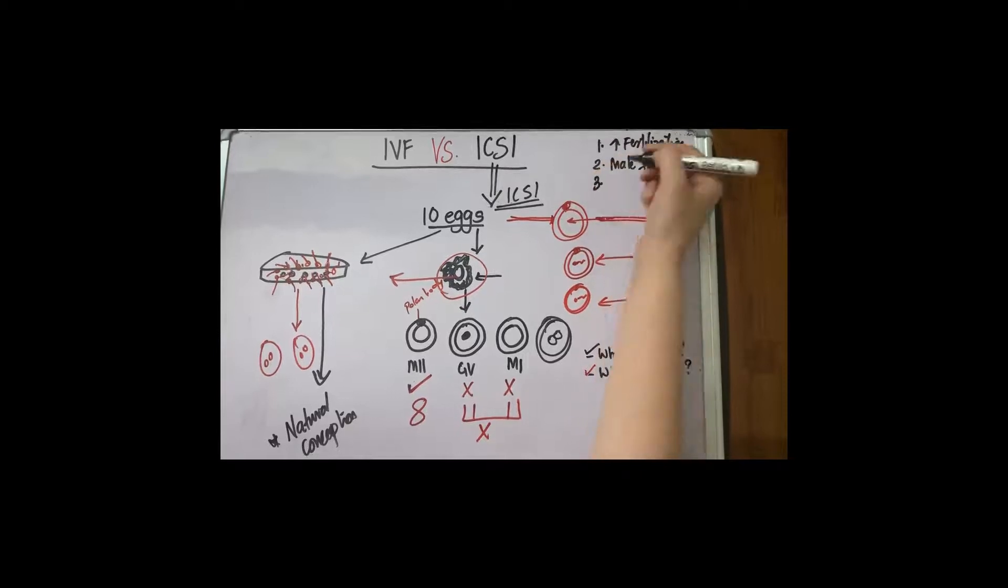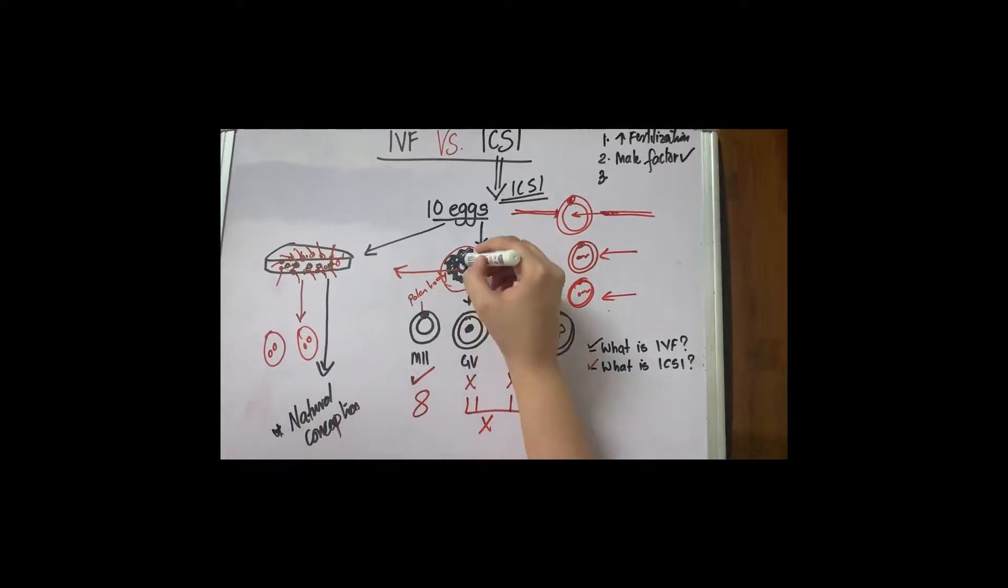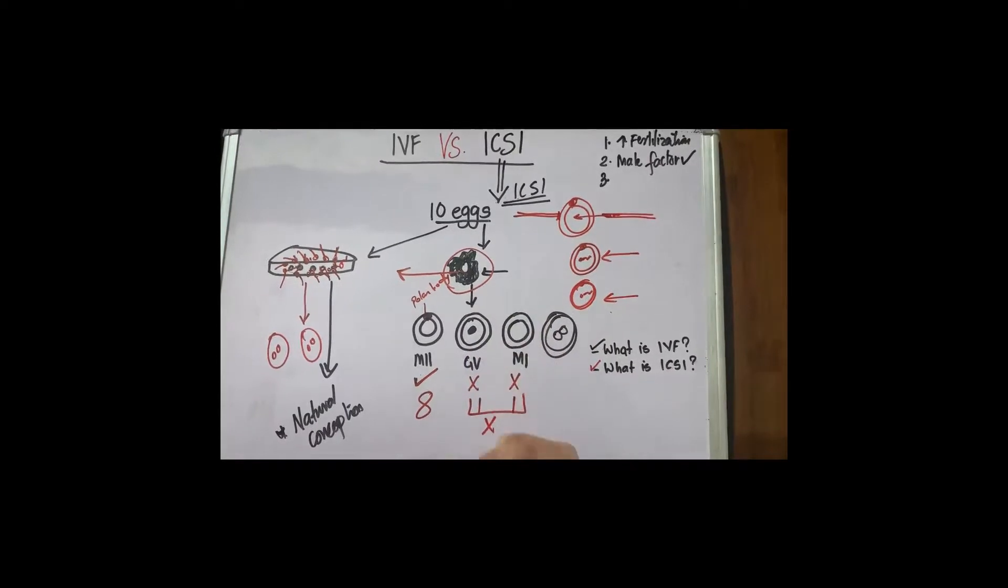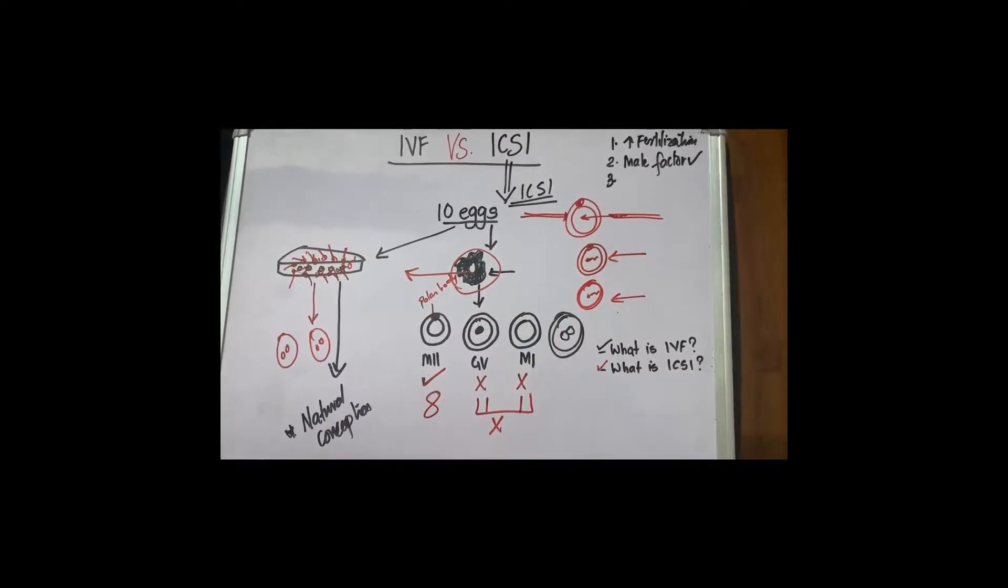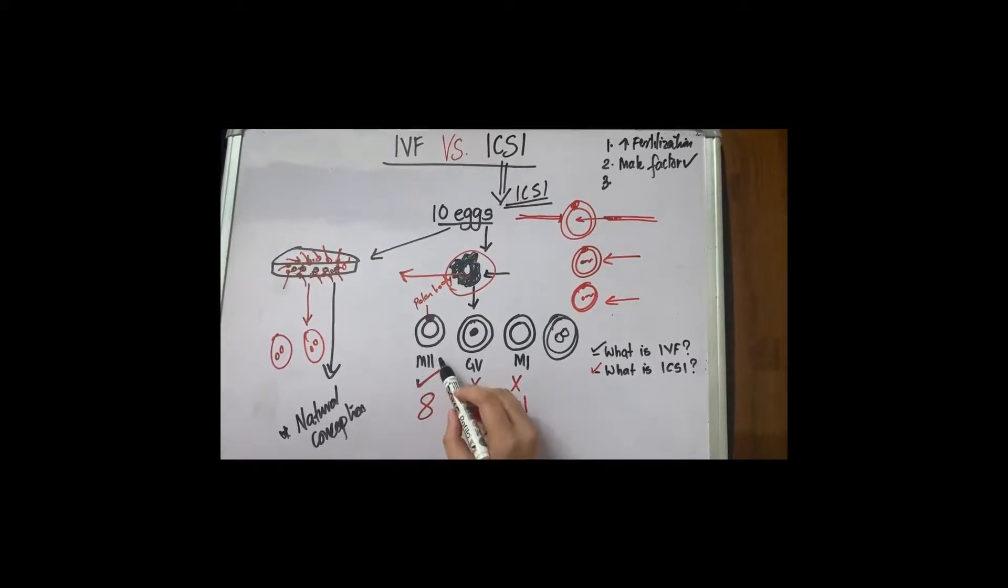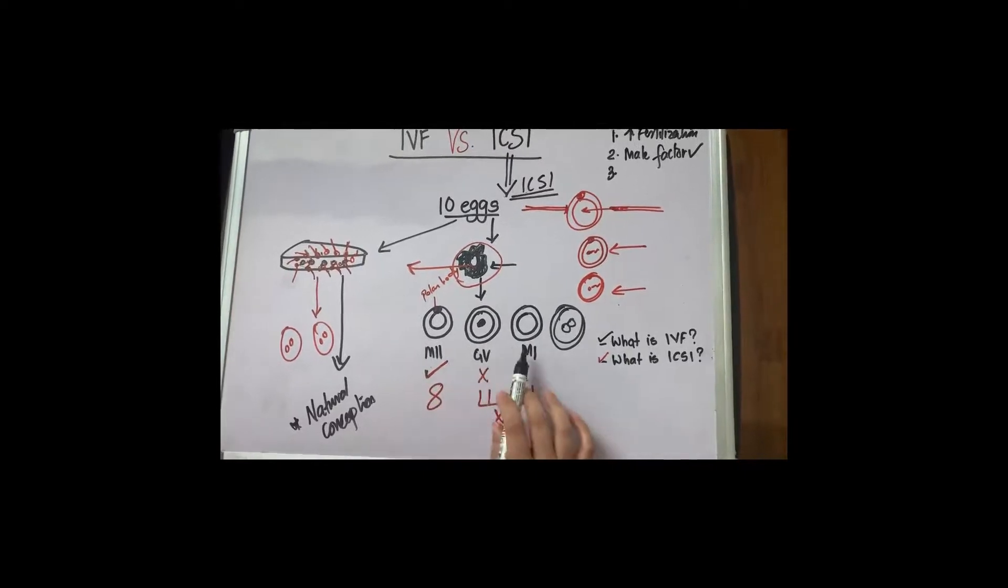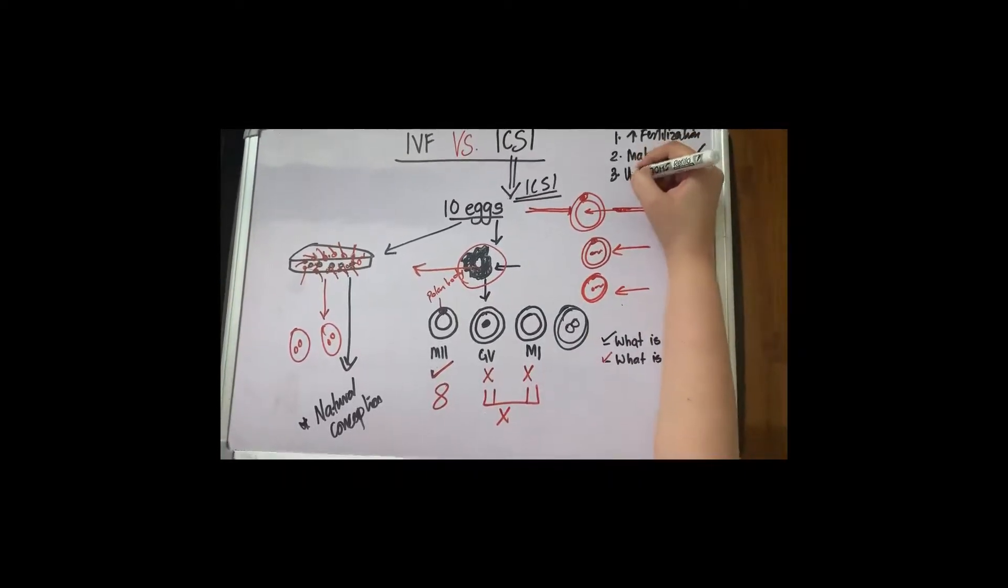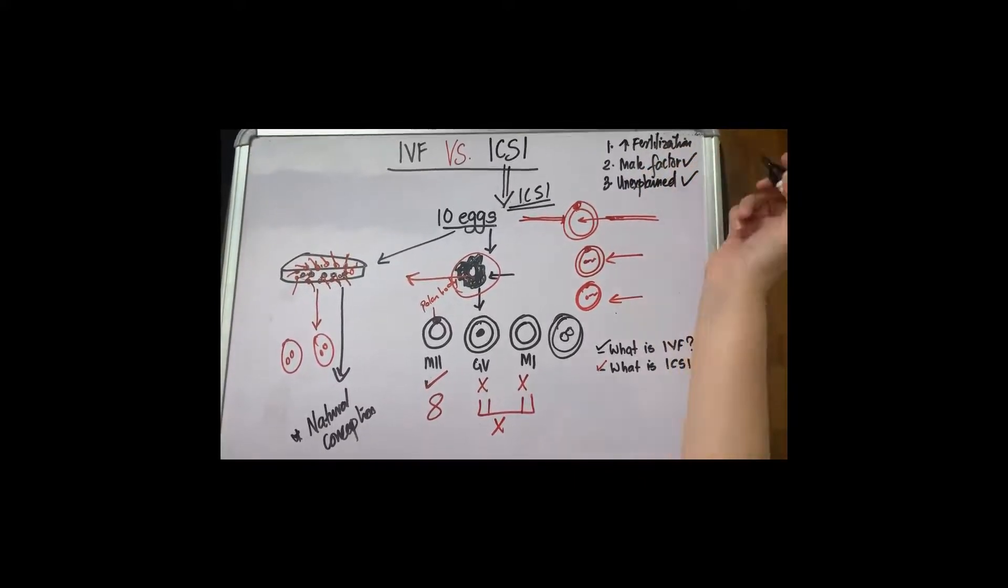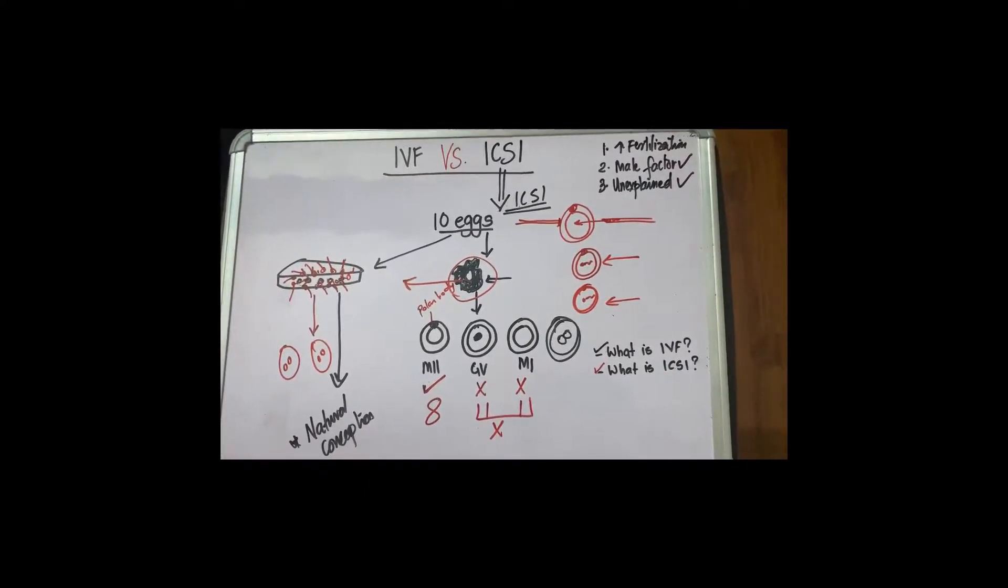Third advantage of ICSI is that, like I said, here we are directly putting the eggs without stripping them off this layer of cells, so we don't know a lot about the egg. Does it have vacuoles? Does it have any other abnormality? Whereas in ICSI, we not only know the maturity of the eggs but also the quality. So it works very well in unexplained cases of infertility.